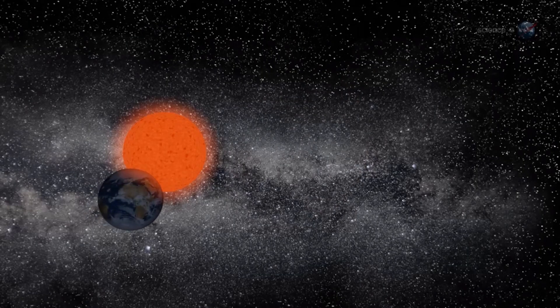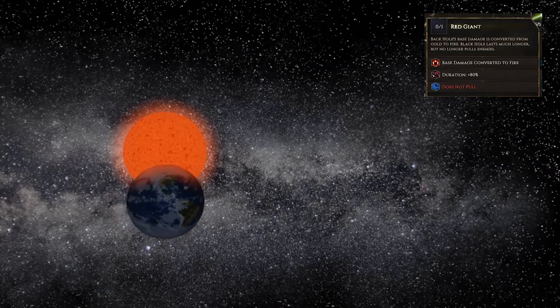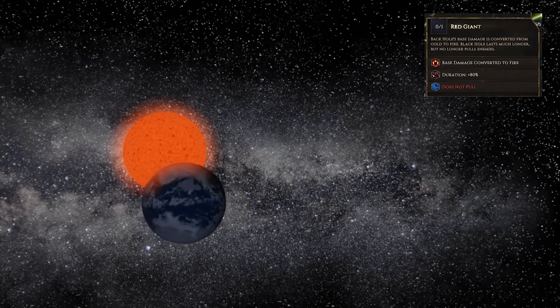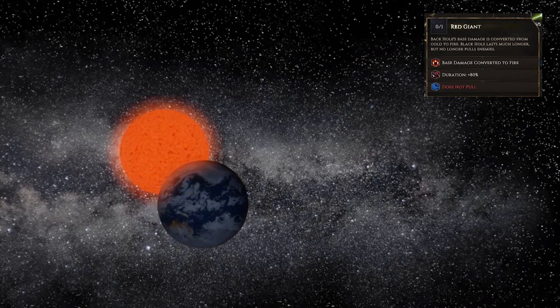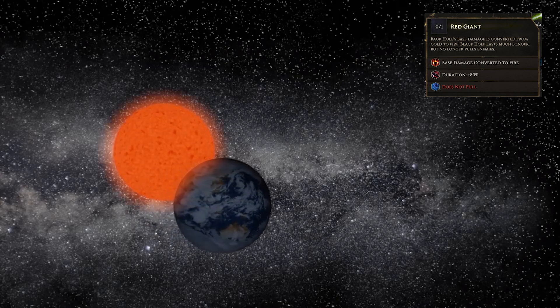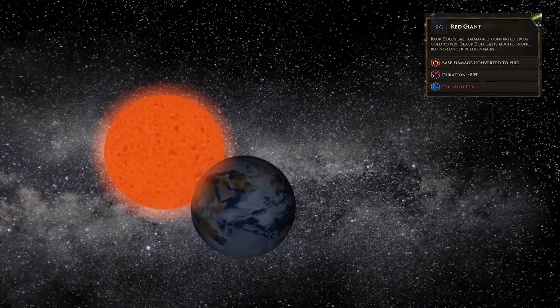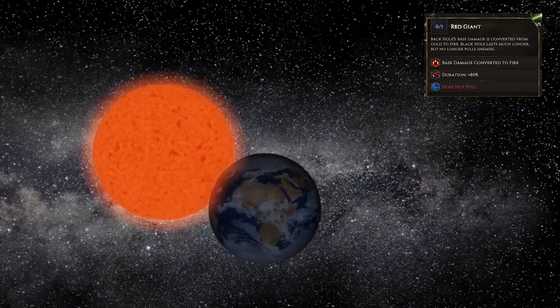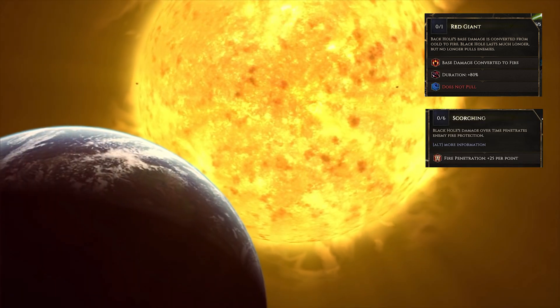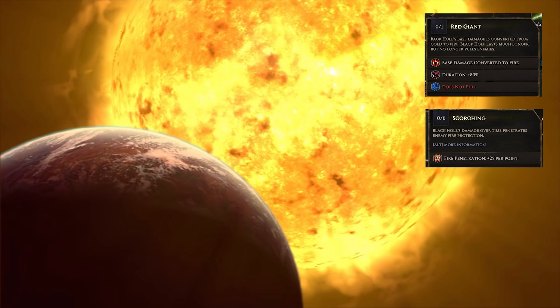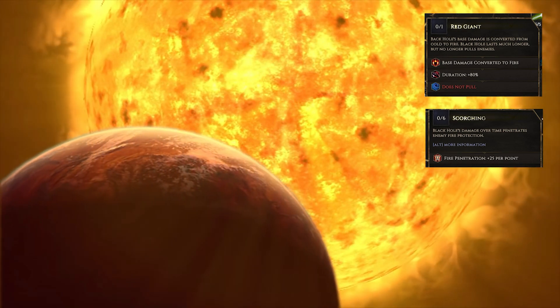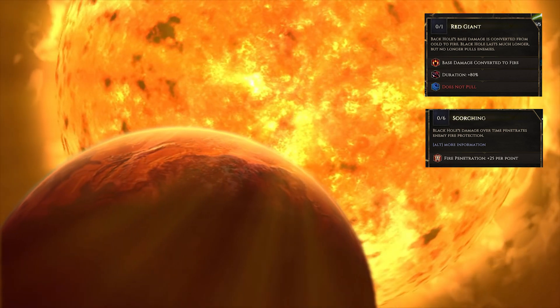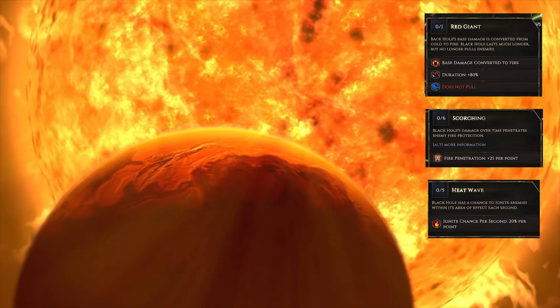Black hole normally deals cold damage, but you can turn the skill into a red giant, making it deal fire damage. It is a clever use of what happens to different categories of stars. Like I mentioned, our sun would actually become a red giant for a bit. It would in fact scorch planets and swallow them whole in fire. So 150 fire penetration seems correct. I think a few things would indeed be ignited as well.